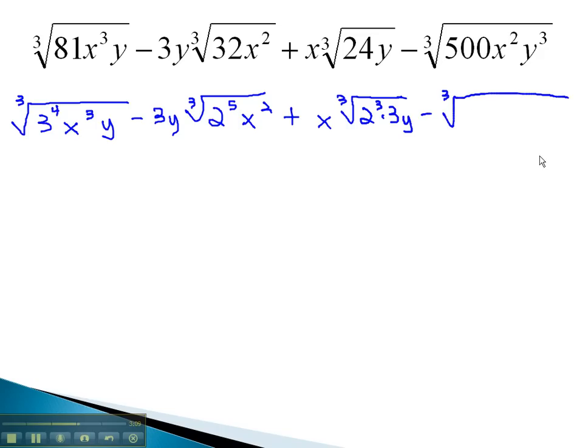Minus the cube root of 500. Finding its prime factorization by dividing out all the prime factors gives us 2 squared times 5 cubed with x squared, y cubed.